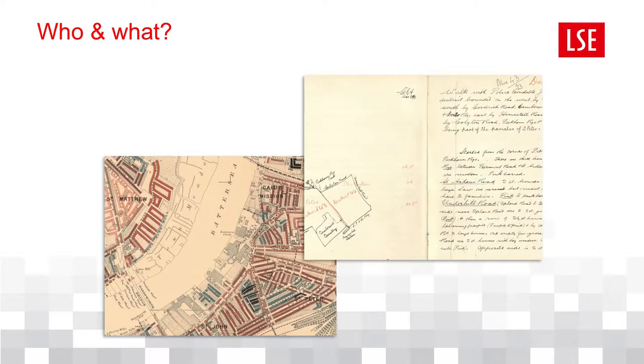So who here has some knowledge of Charles Booth and his poverty maps? I'm seeing maybe half of the people in the audience. For those who don't know, Charles Booth was a Victorian businessman, philanthropist and social reformer. He lived between 1840 and 1916, roughly around that. He was quintessential Victorian and latterly Edwardian.